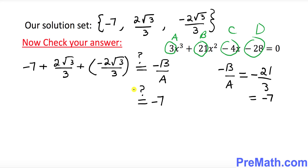Looking at the left-hand side, the two square root of 3 over 3 terms cancel since they have opposite signs, leaving us with negative 7. The left-hand side indeed equals the right-hand side, confirming all three solutions are correct. Thanks for watching and subscribing.